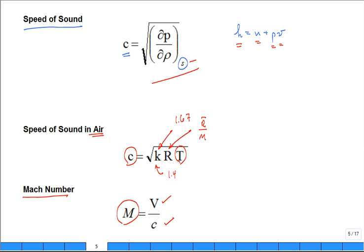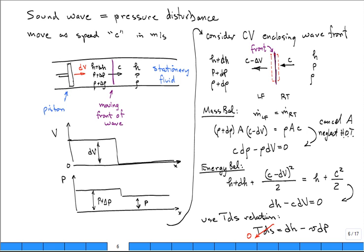These three concepts are important, and basically when you have sound, it's a pressure wave — what you're hearing is a pressure wave traveling to you. So it's a compressible effect. Let's do a quick review of how you get this equation for the speed of sound in a gas or in a fluid. The sound wave is a pressure disturbance.